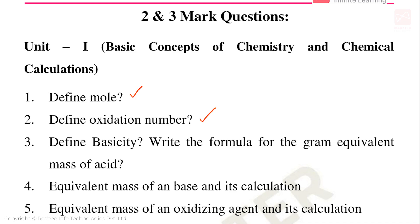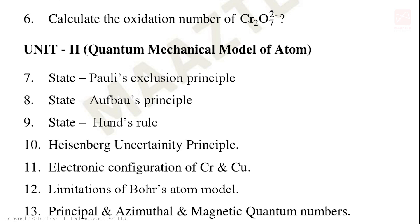In Unit 1, equivalent mass of base with calculation-related questions, equivalent mass of oxidizing agent with calculation-related questions, and calculate the oxidation number of a given compound — these are the important 2 mark and 3 mark golden questions.